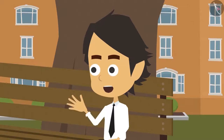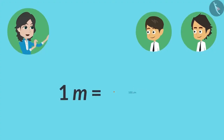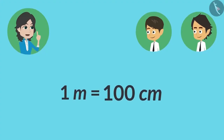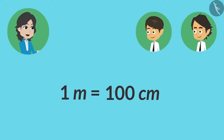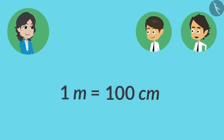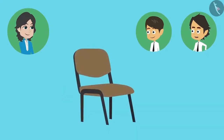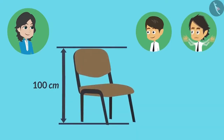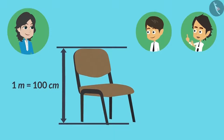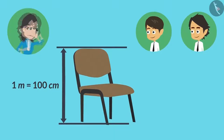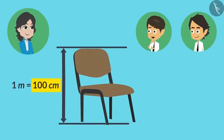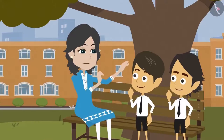Why only bigger than 100 centimeters? Why not smaller than that? Because 1 meter has 100 centimeters. Or we can also say that 1 meter is equal to 100 centimeters. Which means if the length of an object is 100 centimeters, then can we say that the object is 1 meter long? Absolutely right. Why not say 100 centimeters?